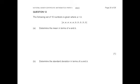Here's an example of a question that can't be calculated using a calculator. It's taken from the IEB Maths Paper 2 from 2021. So the following set of 10 numbers are given where A is more than B, and they haven't given us any values. So the first question they ask is determine the mean in terms of A and B.